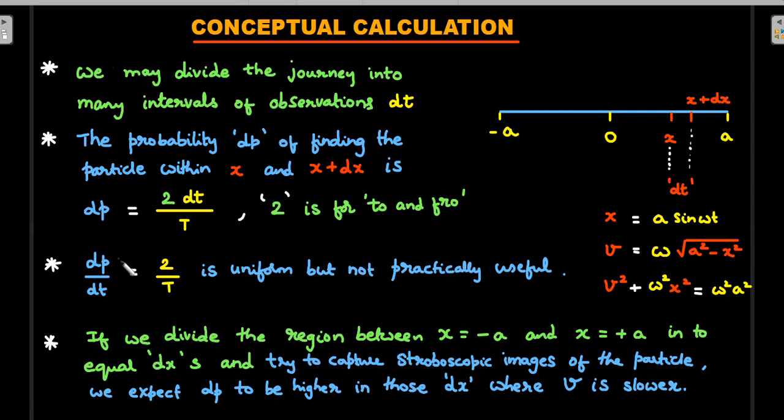So more practical way of representing the probability would be dp/dx rather than dp/dt. In order to convert this x to t and t to x, we need to take the basic SHM equations in one dimension, and you could see all of you would be able to appreciate these things. x is a sin ωt, a standard form of SHM that I have assumed here.